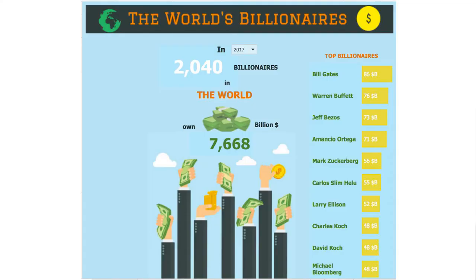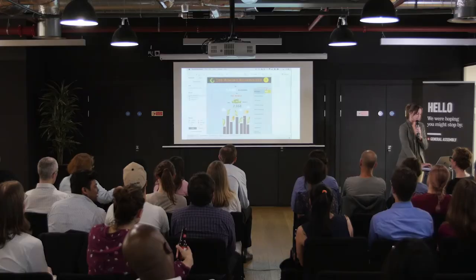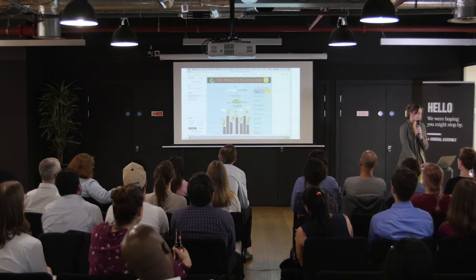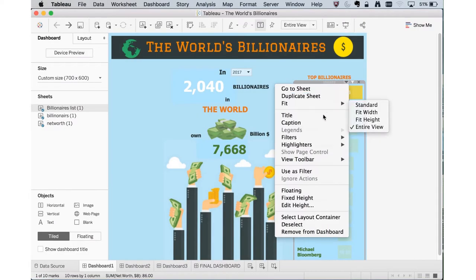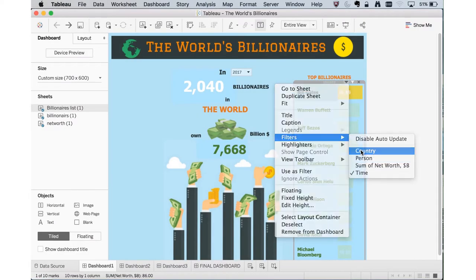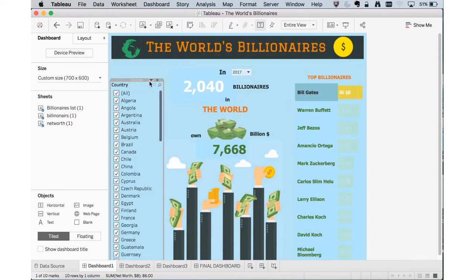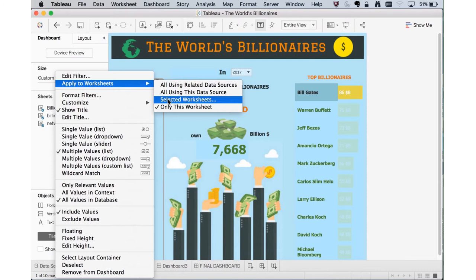As you see, I have a quite simple dashboard with a phrase and a top 10 list on the right. And the only thing I want to do is add a country filter — that's my aim for this talk. So let's start and try to make that filter right. I have a little video that I'm going to walk you through on how I make it right. I included the country filter in the view and applied it to all the sheets on the dashboard.